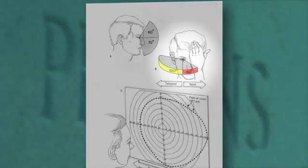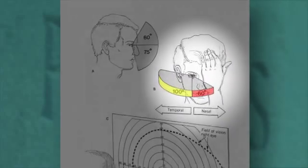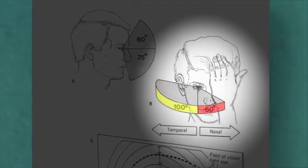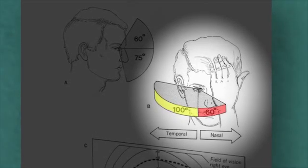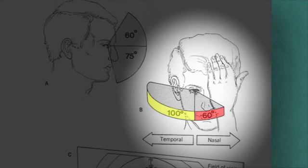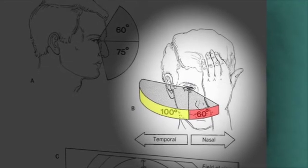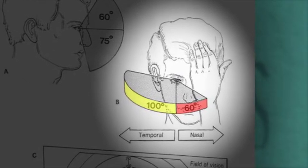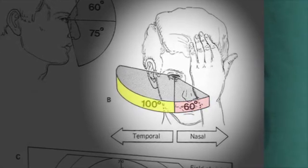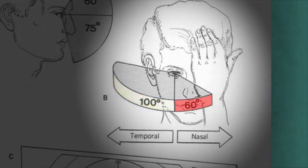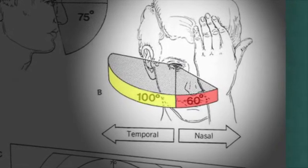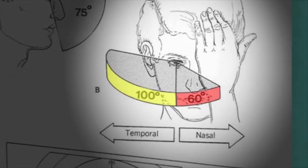We see a pencil sketch of an adult male face head-on with the left eye covered by the left hand. A shaded semicircular wedge shape depicting the horizontal range of the right visual field extends from the eye along a horizontal plane, bisected by a line dividing the wedge into the nasal and temporal fields. The nasal field is described by an arc of 60 degrees.